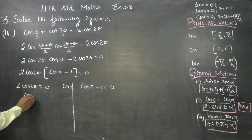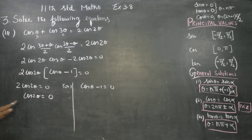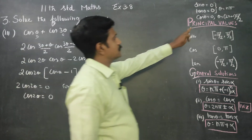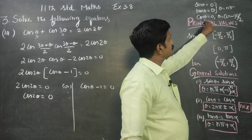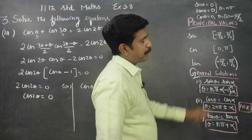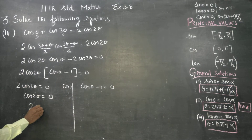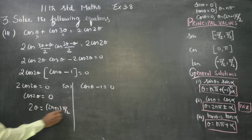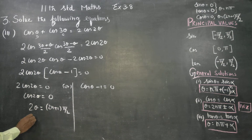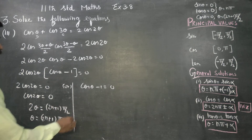Then, cos 2 theta equal to 0. Using the standard formula, cos theta equal to 0 gives theta equal to (2n plus 1) pi by 2. Now, 2 theta equal to (2n plus 1) pi by 2, so theta equals (2n plus 1) pi by 4, where n belongs to integers.